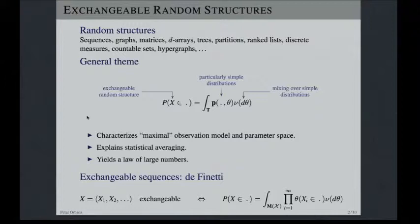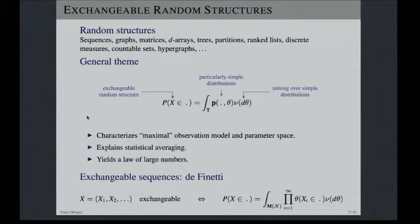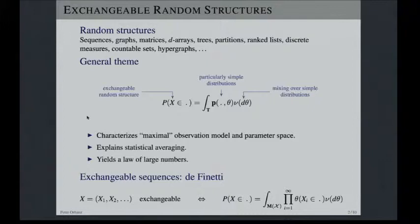There is an idea that is very important in Bayesian statistics: exchangeable random structures. You have a random structure X that is infinitely large, and you have an invariance property called exchangeability. If you have this invariance property, then the distribution of this random structure decomposes in a very neat way — as a mixture over much simpler distributions. This gives us important things for statistics: it characterizes the maximal observation model, explains what a parameter space is, what statistical averaging is, what sample size is, and gives us a law of large numbers.